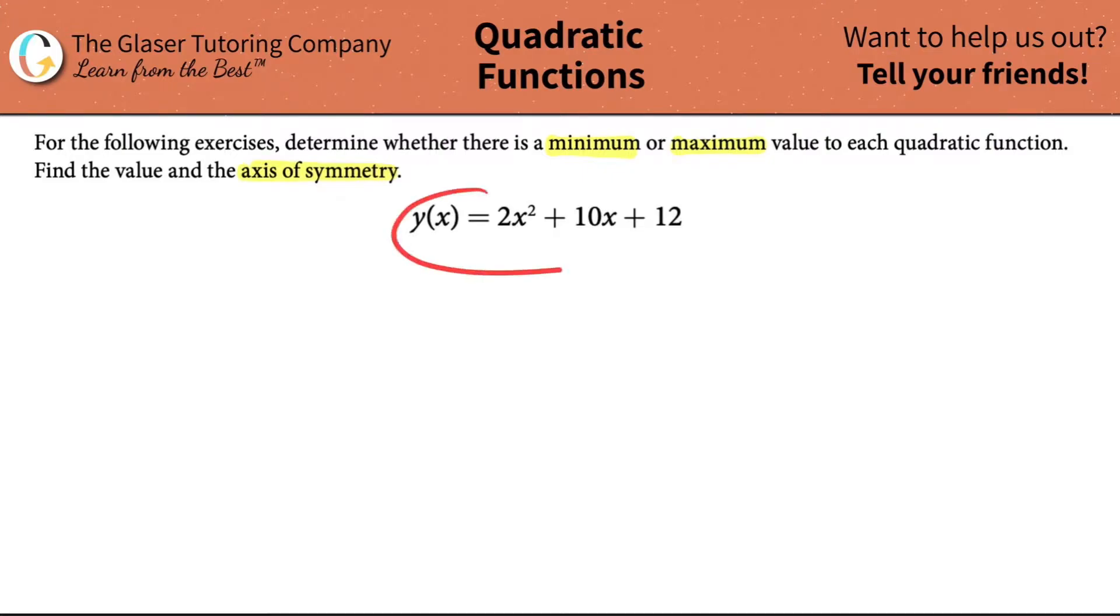This is the first question of this stack. We have this quadratic function. I know that it's a quadratic function because it has the highest x value as being squared. Anything that has an x value being squared is a quadratic function. If I had like an x cubed, that wouldn't be a quadratic function. If I just had an x value, that's not a quadratic function.